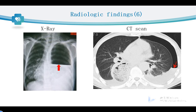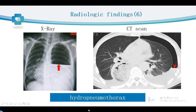The last two pictures of x-ray and CT scan: we can find an air-fluid level, which indicates hydropneumothorax. If the effusion is bloody, we can also call it hemopneumothorax. Those are the radiologic findings during x-ray and CT scan.